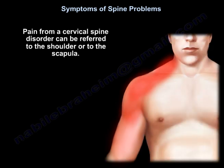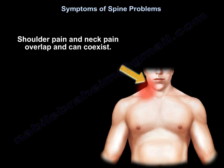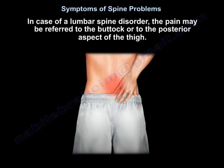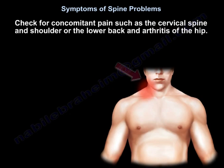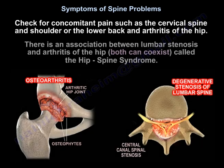Pain from cervical spine disorder can be referred to the shoulder or the scapula. Shoulder pain and neck pain overlap and can coexist. In case of lumbar spine disorder, the pain may be referred to the buttock or to the posterior aspect of the thigh. Check for concomitant pain, such as cervical spine and shoulder, or lower back and arthritis of the hip. There is an association between lumbar stenosis and arthritis of the hip — both can coexist, and it is called the hip-spine syndrome.